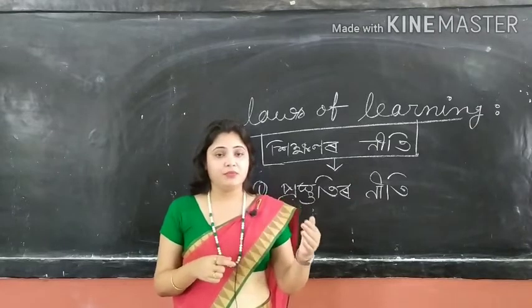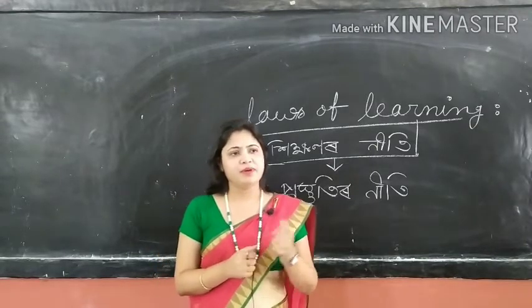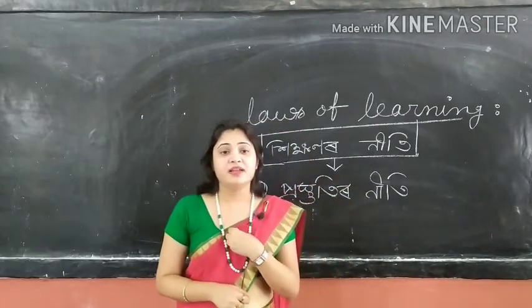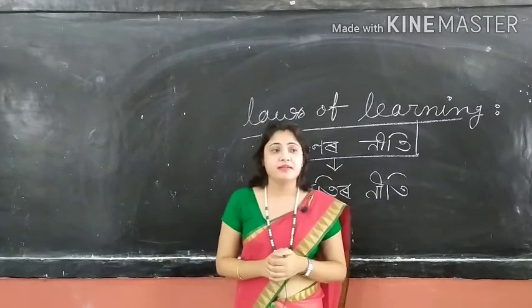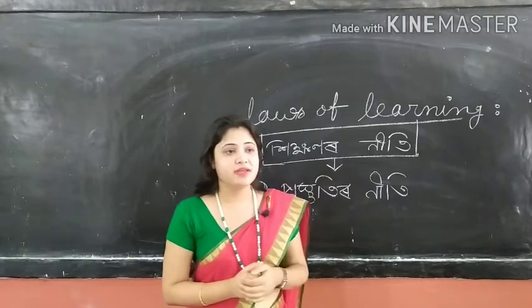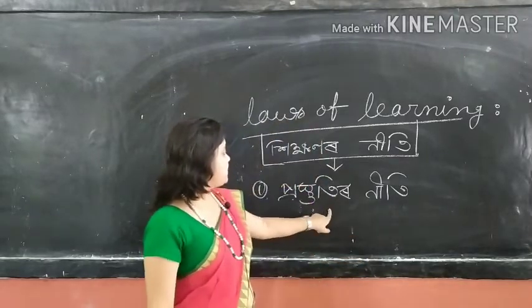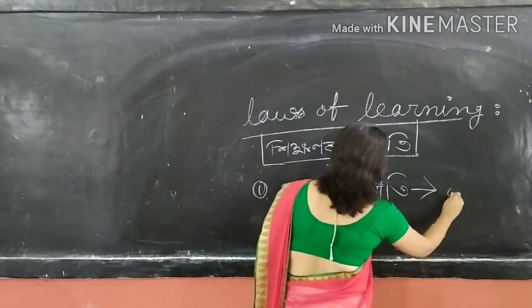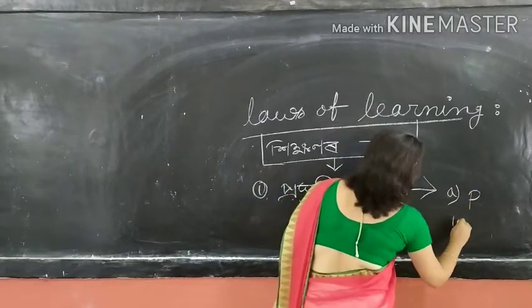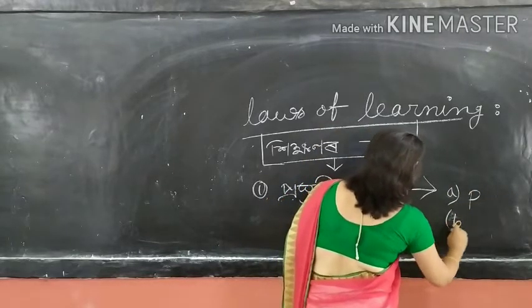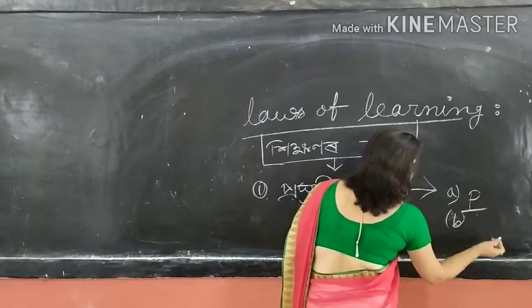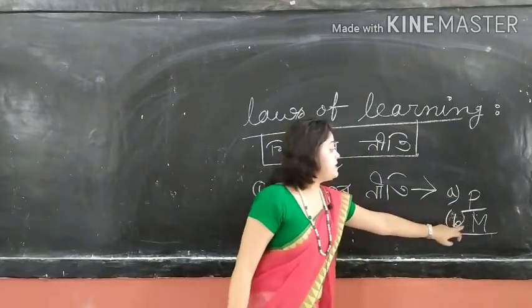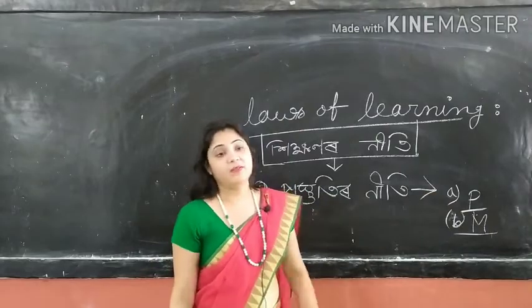Self-realization and self-satisfaction are achieved when people are ready for their work. We are first applying readiness — both physically and mentally. P means physically and M means mentally. Physically and mentally, I am ready.